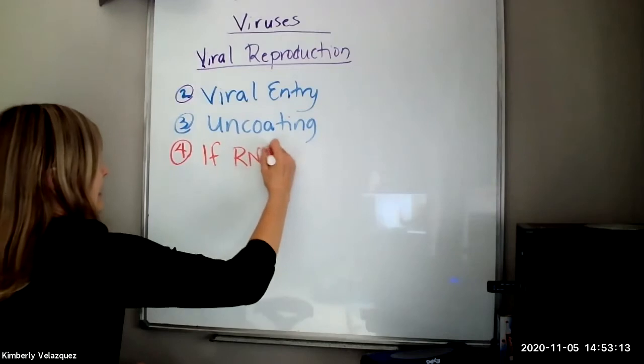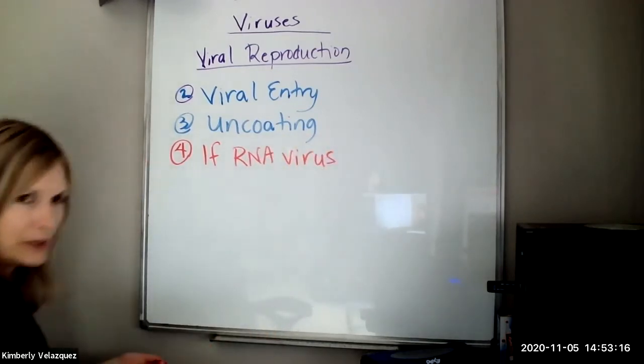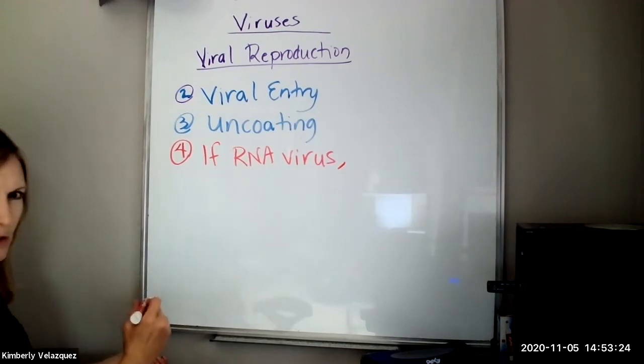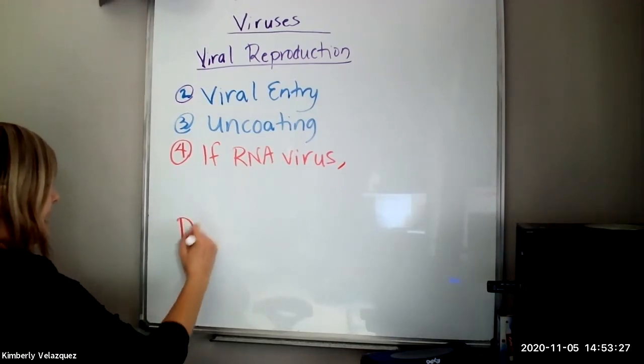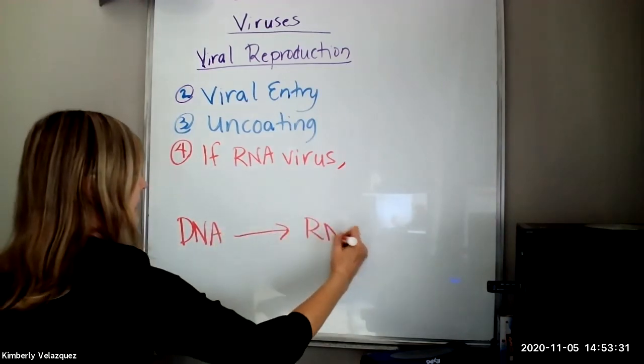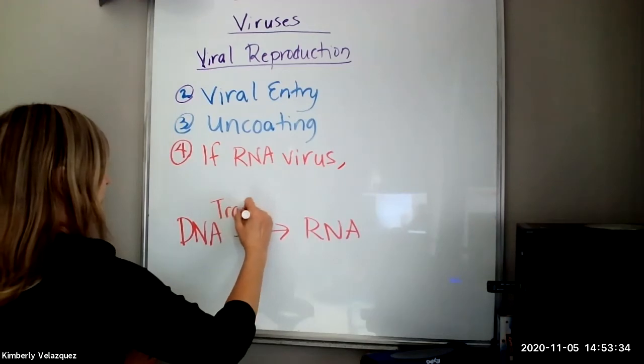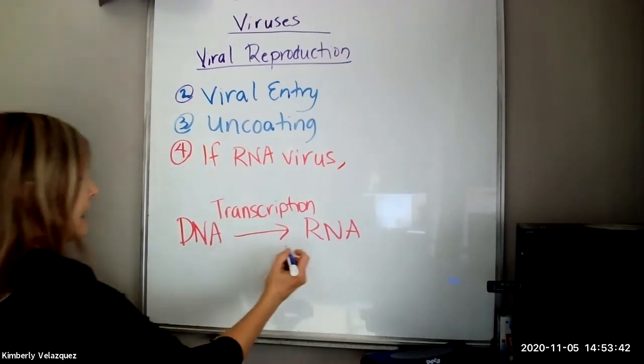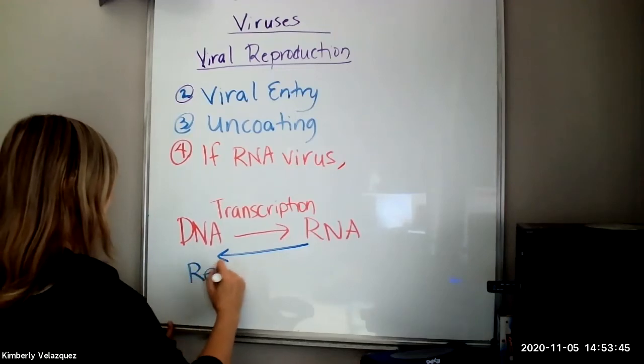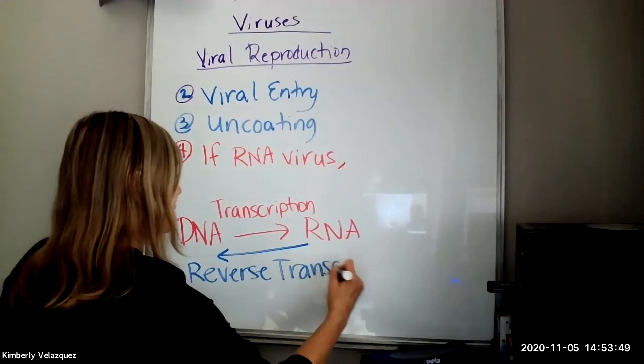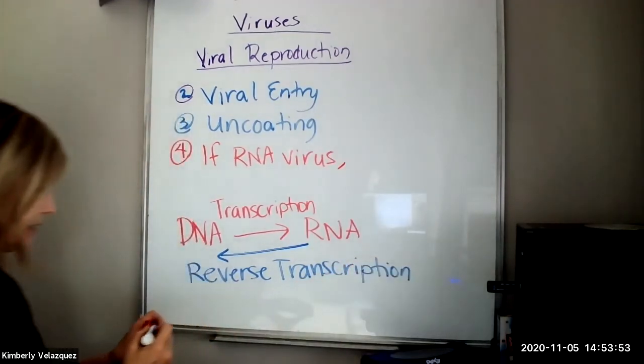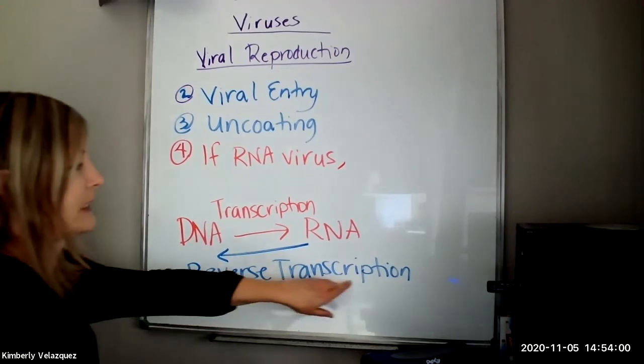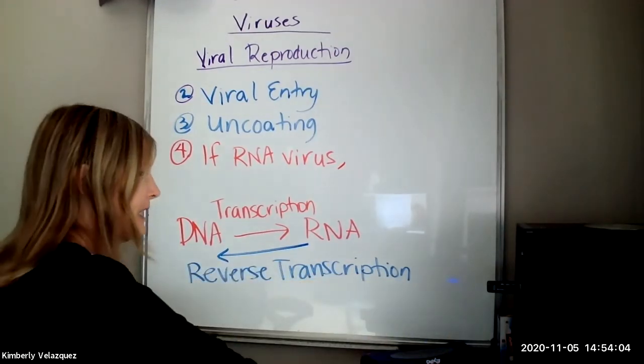If it's an RNA virus, there's going to be another step necessary before it can start replicating. Remember, just as a little side story here, that DNA becoming RNA is called transcription. To go the other direction for RNA to become DNA is called reverse transcription. This does not happen in living organisms and therefore living organisms don't have the enzyme to do this. This is one of the enzymes that the virus brings with it. It's an enzyme called reverse transcriptase. Remember that most enzymes end in -ase and they tell you what they do.